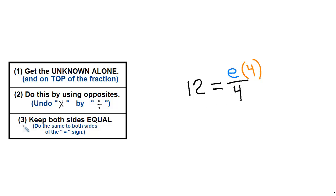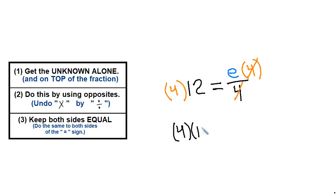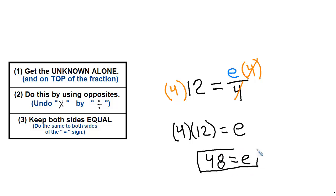Remember our third rule: keep both sides equal. So if I'm going to multiply this side by 4, I have to also multiply this side by 4. Then the 4 on top and the 4 on the bottom reduce. Rewriting it, I have 4 times 12 on the left side, and on the right side, those are gone — equals e. So the e is by itself. The answer is 4 times 12, which is 48. Equals e.